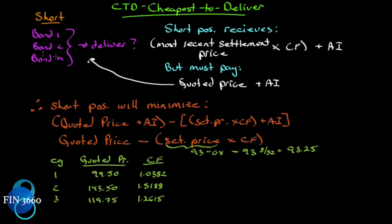A naive thinker might say: just find the one with the lowest price and deliver that one. But be careful — that might not be the right thing, because there's a conversion factor. What do we receive when we deliver? We're going to receive the most recent settlement price on the Treasury futures contract — because that's what we were engaged with — times the conversion factor. Each bond has its specific conversion factor, and we've already seen how to figure that out. Plus we also get any accrued interest owed from the last coupon payment.